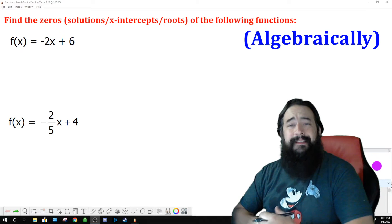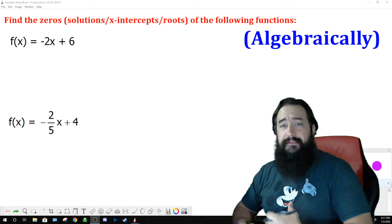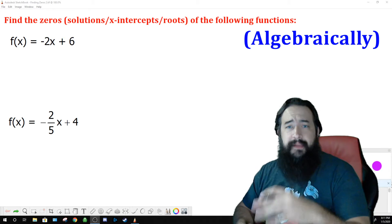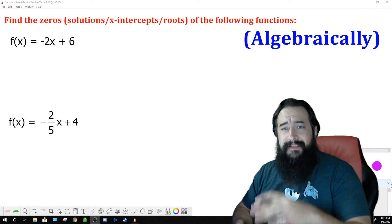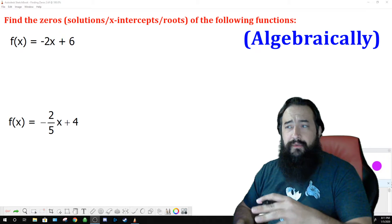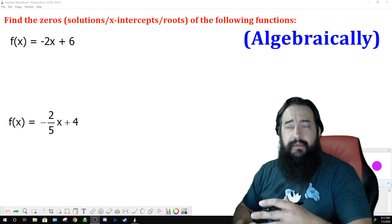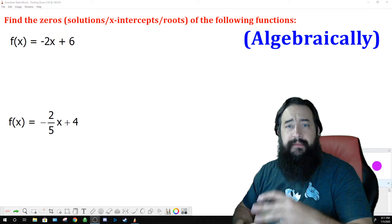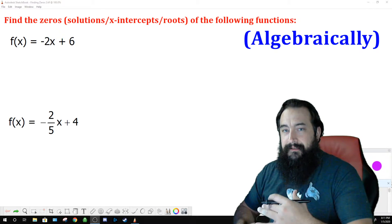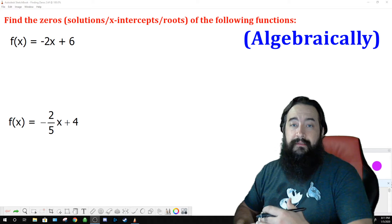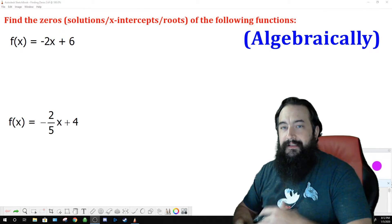But maybe you're not. So here are the steps on how you would solve this exercise. f(x) represents the function's output. Since the root or the zero of the equation or the function is where the function's output is zero, we are going to replace f(x) with zero, and then solve for x. This will effectively find the x value when the y value, the function output, is zero, when it's crossing the x-axis. Let's go ahead and do that.